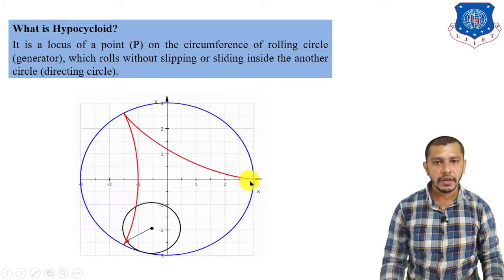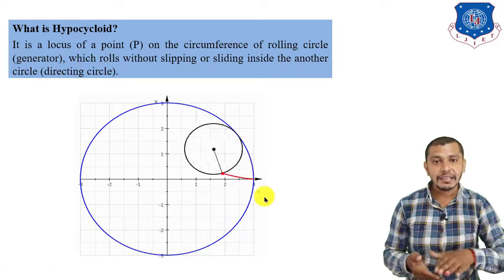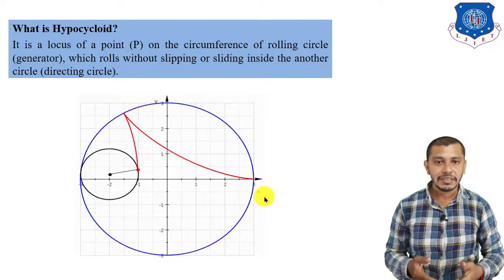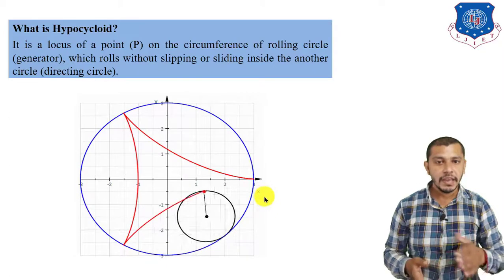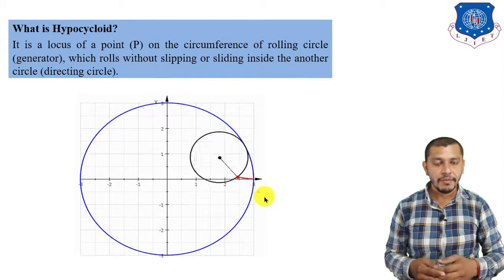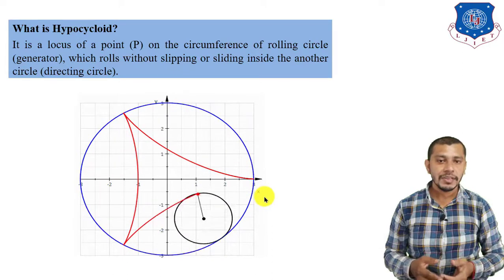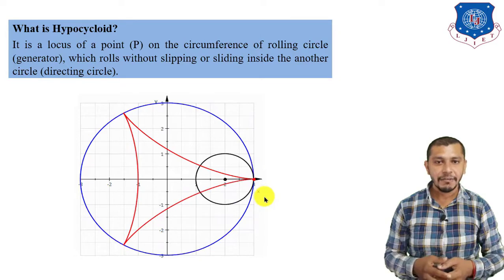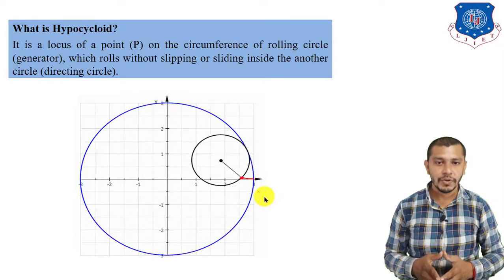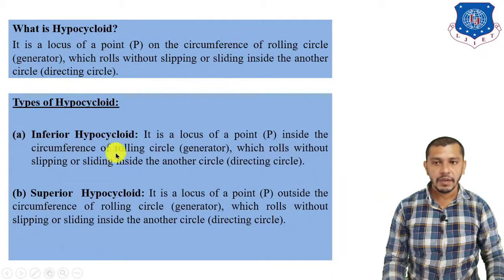In hypocycloid, if you take the point inside the circumference of the rolling circle, the curve generated will be the inferior hypotrochoid. If you take the point outside the circumference of the rolling circle, the curve generated will be the superior hypotrochoid.